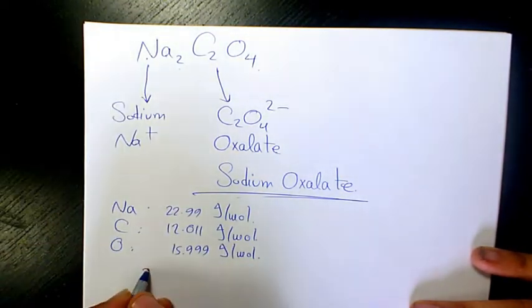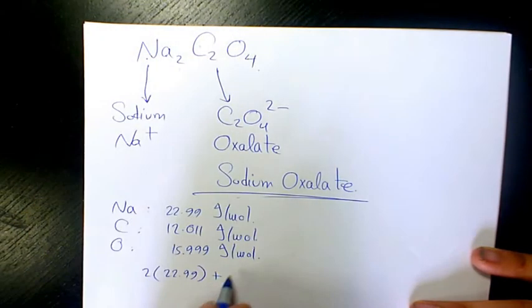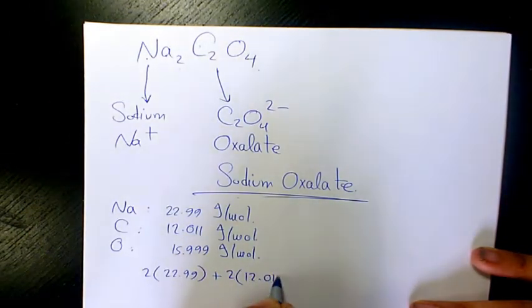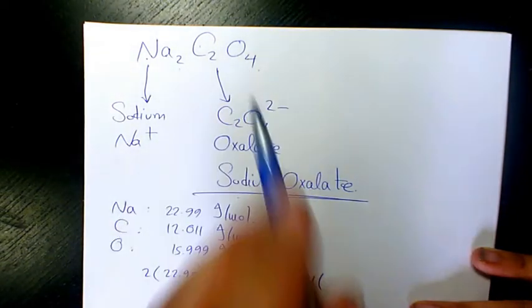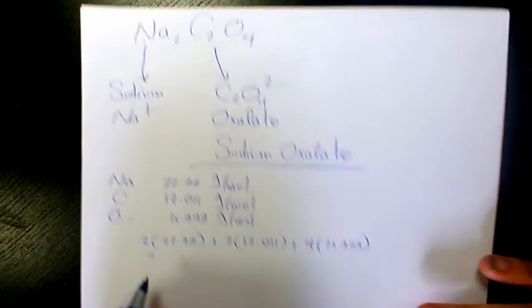So we have two atoms of sodium, 2 times 22.99, plus two atoms of carbon, 2 times 12.011, plus four atoms of oxygen, which is 15.999. When you calculate it,